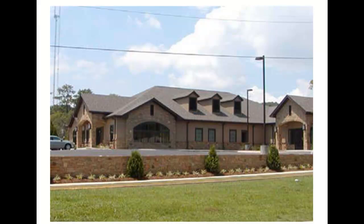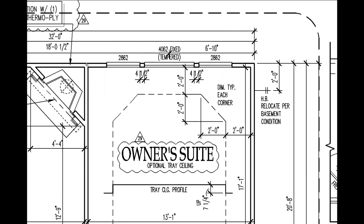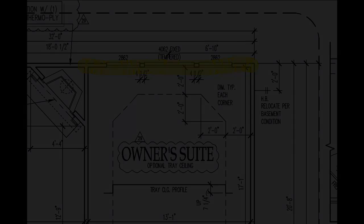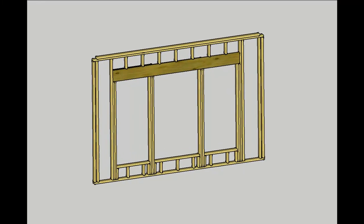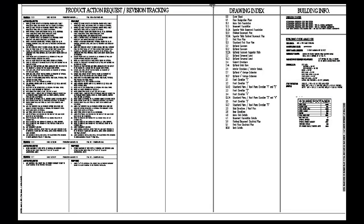To demonstrate how this works, we're going to go through the process that a framing carpenter would use to pull information from this set of plans and frame this section of wall, ultimately looking like the example you see here. In order to complete this, we'll need information provided from both the architectural and the structural drawings.